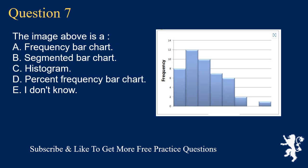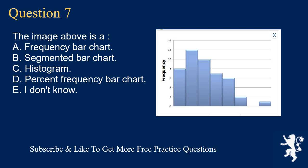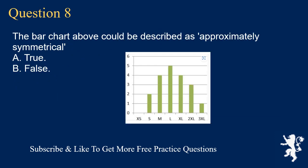Question 7: The image above is A. a frequency bar chart, B. segmented bar chart, C. histogram, D. percent frequency bar chart, E. I don't know. The correct answer is C, histogram.